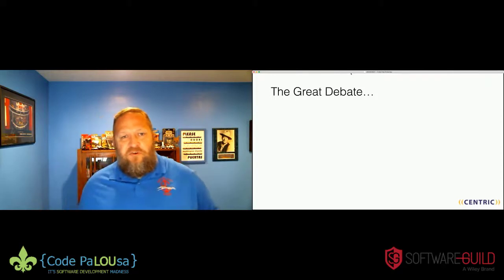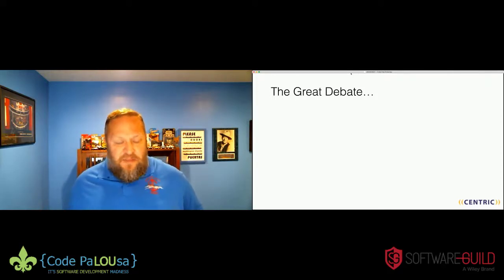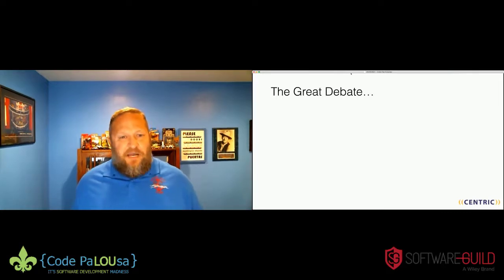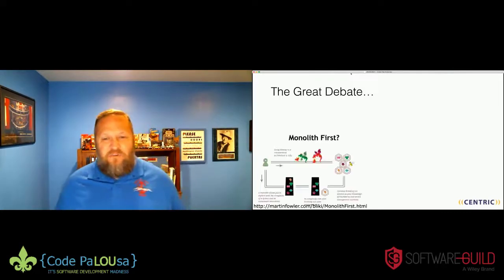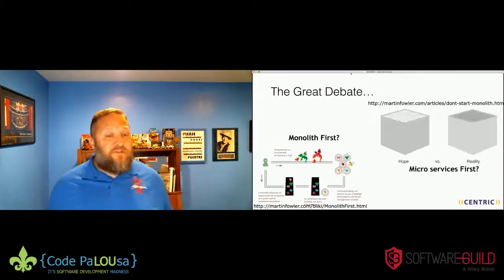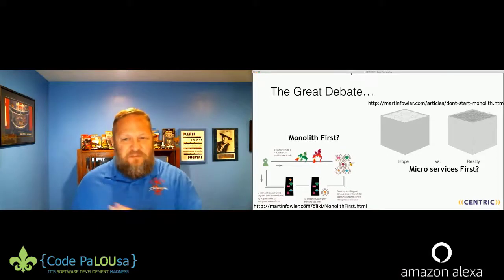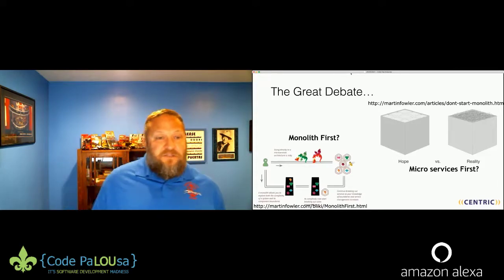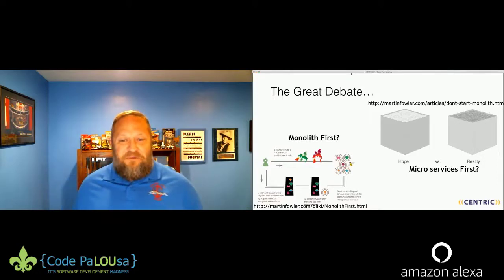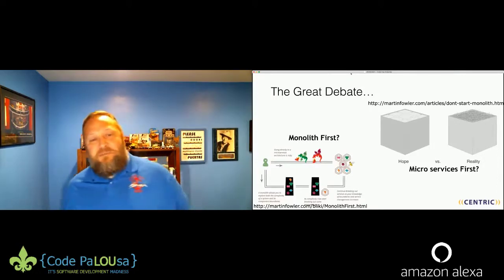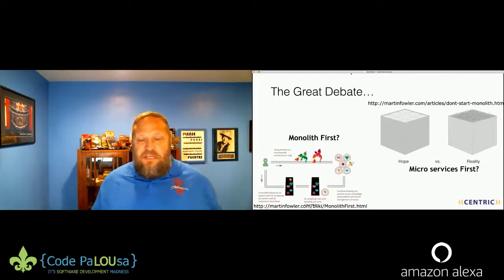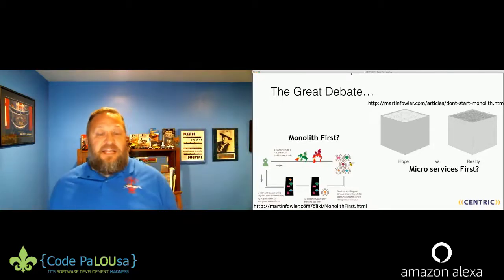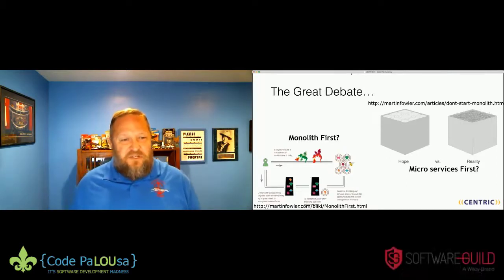Depending on who you talk to — if you talk to the Basecamp people, they built Basecamp as a monolith, and they speak about the glorious monolith. So there's a debate: do I build a system as a monolith first or take a microservices approach first? I've referenced two articles from Martin Fowler's blog that discuss both: 'Don't start with a monolith' and 'Start with a monolith first.' They're both on the same site, so there's internal tension there.